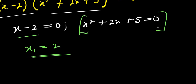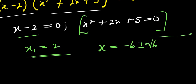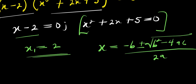The second factor can be solved using the quadratic formula. So let's write the formula — that's a quadratic equation. This is the quadratic formula, and a equals 1, which is the coefficient of x squared, b equals 2, and c equals 5.